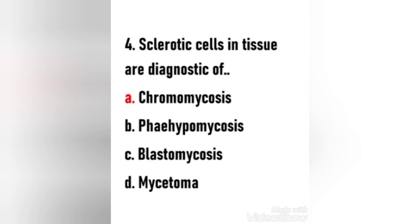Next question: Sclerotic cells in tissue are diagnostic of — chromomycosis, pheohyphomycosis, blastomycosis, or mycetoma? The right answer is option A, chromomycosis. Sclerotic cells, also known as medlar bodies, are globe-shaped, cigar-colored, thick-walled structures that are 4 to 12 micrometers in tissue.